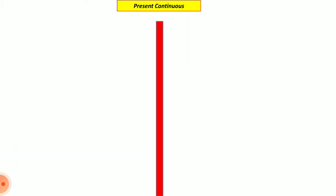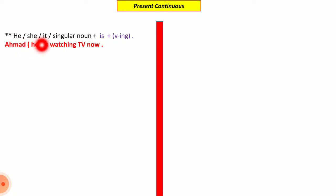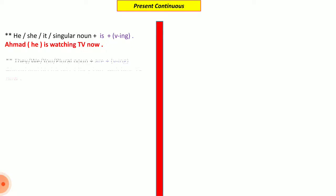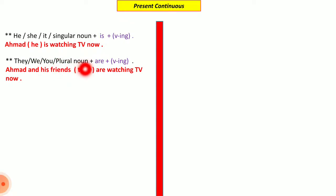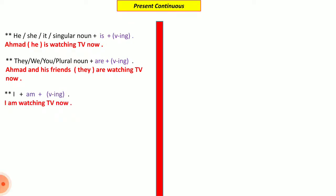Now the second tense: present continuous. We divided the subject into three groups. Group one: he, she, it, or any singular noun — we use 'is' with 'ing.' Example: 'Ahmed is watching TV now' or 'he is watching TV now.' Group two: they, we, you, or any plural noun — we use 'are' with 'ing': 'Ahmed and his friends are watching TV now.' Group three: I alone — we use 'am' with 'ing': 'I am watching TV now.' This all applies in the affirmative.